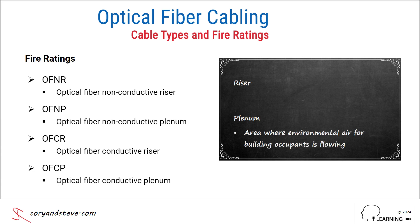Riser and plenum are terms used to identify the intended location of the cable within a building. If the cable is to be placed in an area where environmental air for building occupants is flowing, it must have a plenum rating. For example, the network cables placed horizontally above a suspended ceiling that's used to return warm air to the air conditioning system in an office building would have to be rated plenum, whereas cables placed vertically between floors in the same building would require a riser rating.